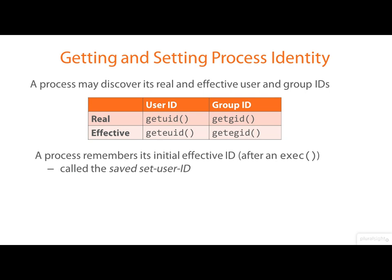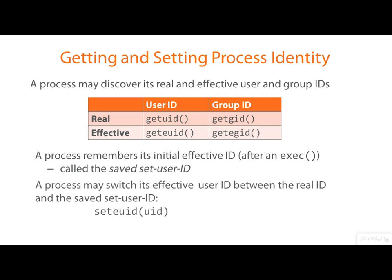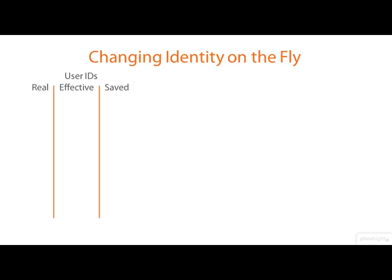The saved set user ID is the initial effective user ID immediately after an exec. The reason this is important is that a process can switch its effective user ID between the real ID and the saved set user ID, so it can switch between privileged and unprivileged modes as it executes. Let me talk you through a timeline of how this might look.